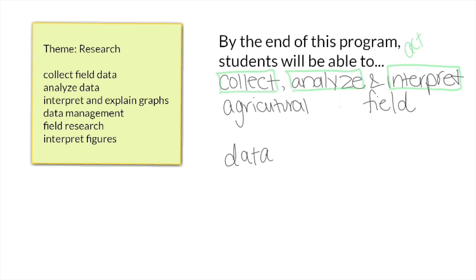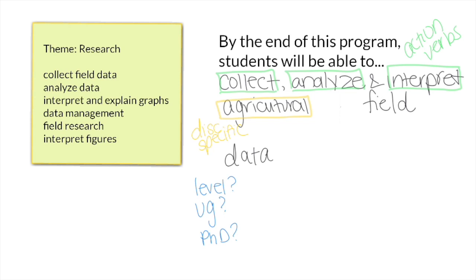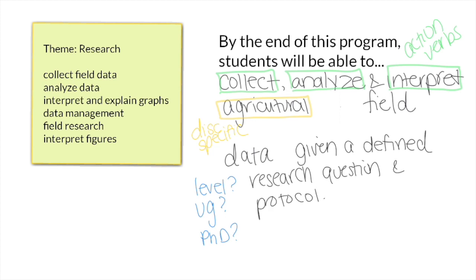We can also make the level of learning more clear. For example, a PhD student carries out in-depth research, but they have a different set of skills than an undergraduate completing a lab. Since this is for an undergrad program, we can mention the kinds of things they'll be doing — like labs or questions requiring a hypothesis — or make it more general by saying 'given a defined research question and protocol.' The full draft outcome then reads: 'by the end of the program, students will be able to collect, analyze, and interpret agricultural field data given a defined research question and protocol.'